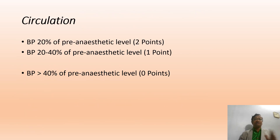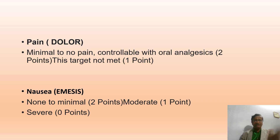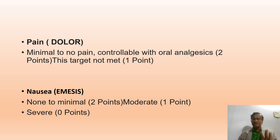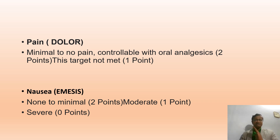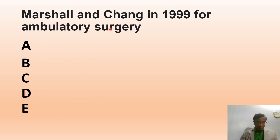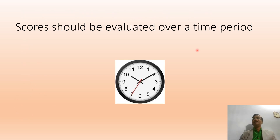Marshall-Chang also adds Bleeding: no dressing change required is two points; up to two dressing changes is one point; more than three dressing changes is zero. Circulation is similar — 20%, 20–40%, and more than 40% deviation. Pain: minimal or controllable with oral analgesia is two; if the target is not met it scores lower; severe pain is zero. Nausea and emesis: none to minimal is two; moderate is one; severe is zero.